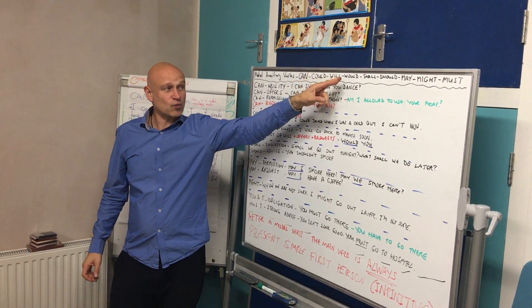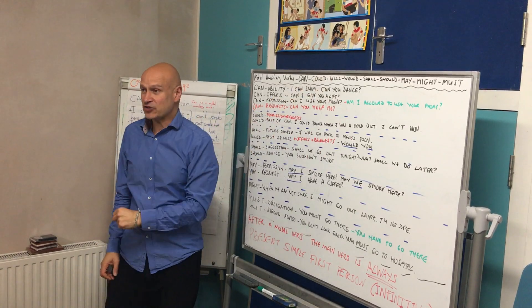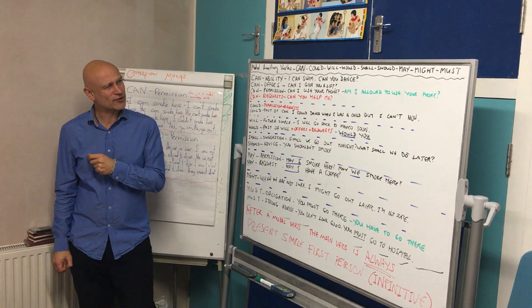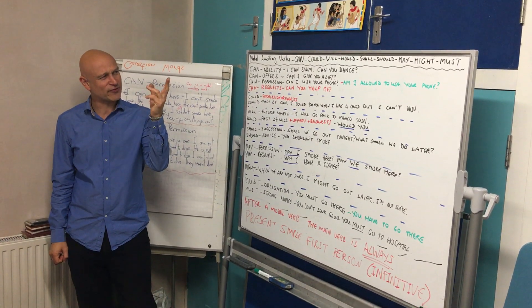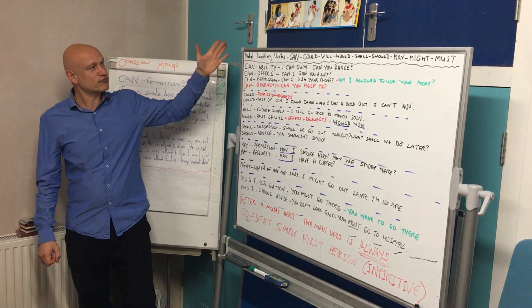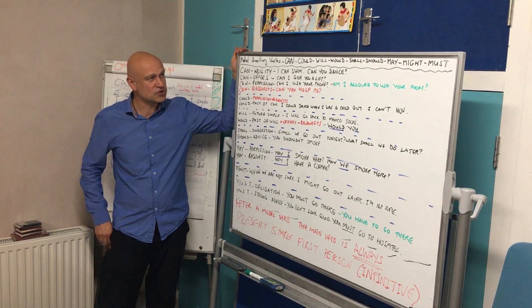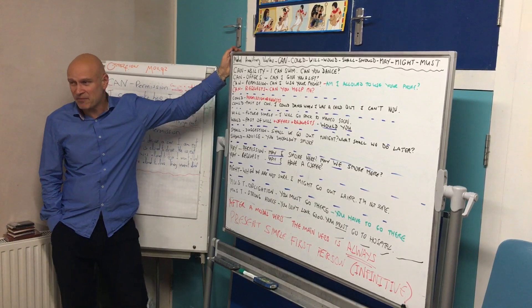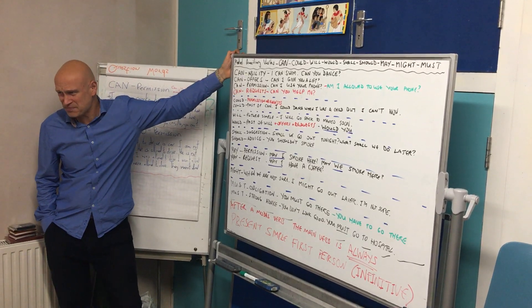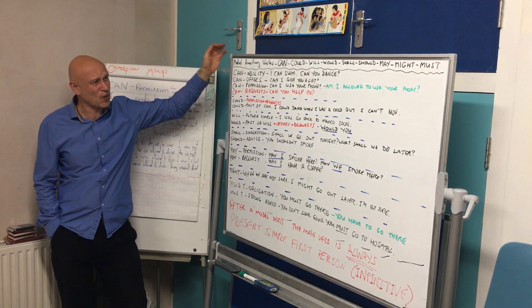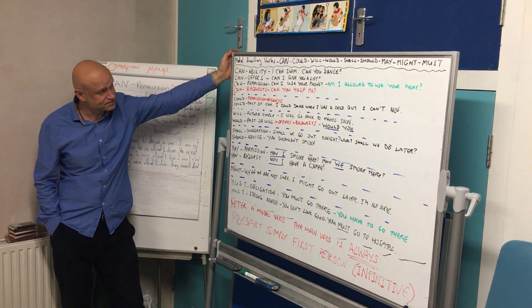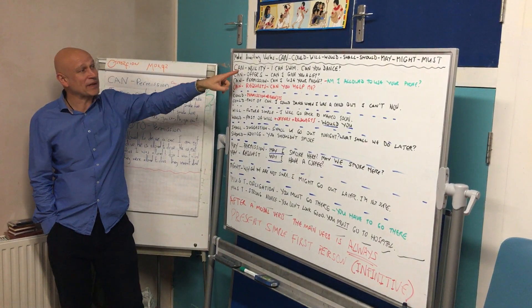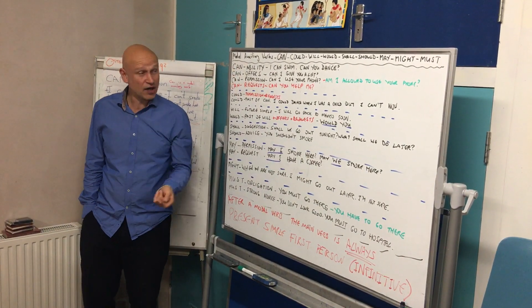Can and could, will and would, shall and should, may, might, must. Here are the nine most important modal auxiliary verbs — there might be some others but I don't want to talk about those. These are the ones. So we use 'can' for ability: I can swim, can you dance?